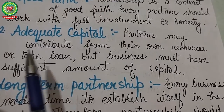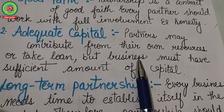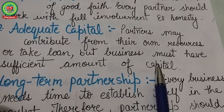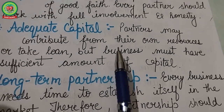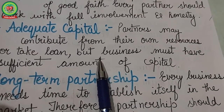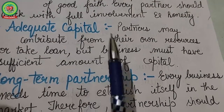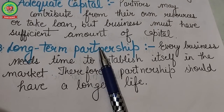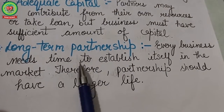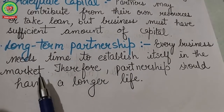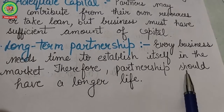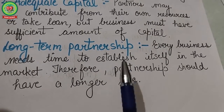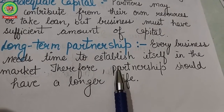Next is adequate capital. Partners may contribute from their own resources or take a loan, but the business must have a sufficient amount of capital, as adequate capital is required for the success of the firm. Next is long-term partnership: every business needs time to establish itself in the market, therefore the partnership should have a longer life to get sufficient time to achieve success.